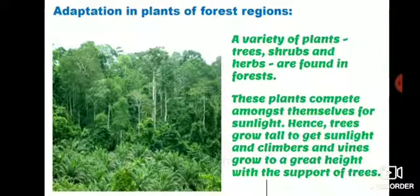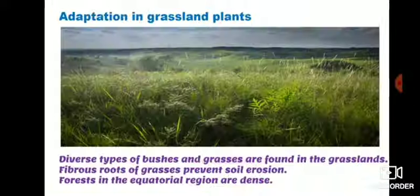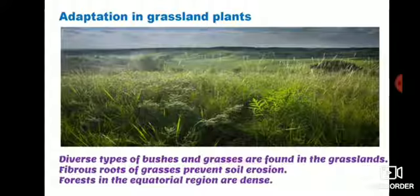Adaptations in plants of the forest region. A variety of plants, trees, shrubs and herbs are found in forests. These plants compete amongst themselves for sunlight. Hence trees grow tall to get sunlight, and climbers and vines grow to a great height with the support of trees. Adaptations in grassland plants: diverse types of bushes and grasses are found in the grassland, and fibrous roots of grasses prevent soil erosion.